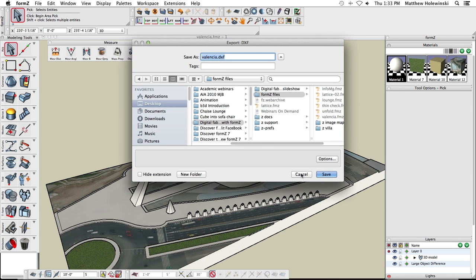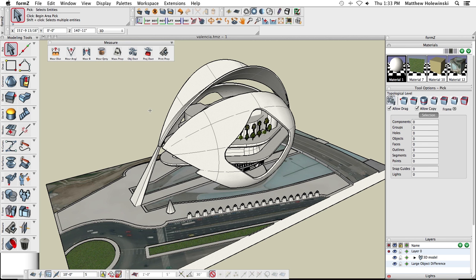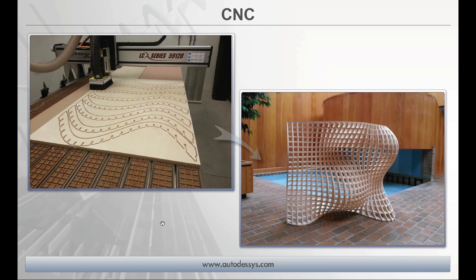That's a quick look at the 3D printing process. Let's move on to the next digital fabrication topic: CNC fabrication. Computer Numerical Control machines use 3D model data to control tool paths for any type of manufacturing process. CNC is usually a subtractive process — in contrast to 3D printing's additive process. In 3D printing, you add layer upon layer to build a form, whereas with CNC you start with a chunk of wood, foam, or steel and subtract material to get your desired form.